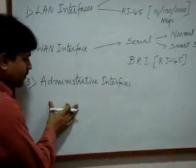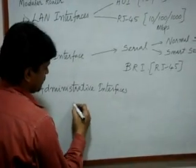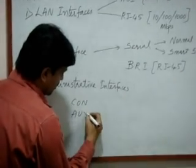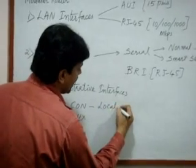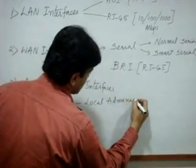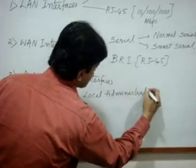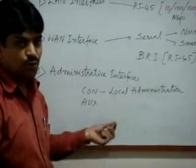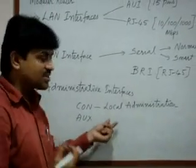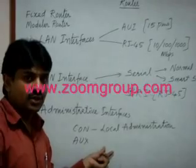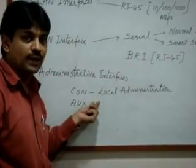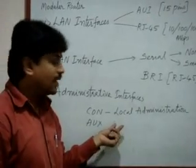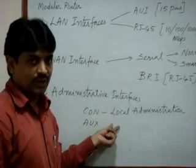Next we have administrative interfaces. There are two types: the console port and the auxiliary port. The console port is for local administration. After purchasing a new router, the first-time configuration is called initial configuration, and we connect to the console port for that. It is also used for advanced troubleshooting if any problems arise in the future.